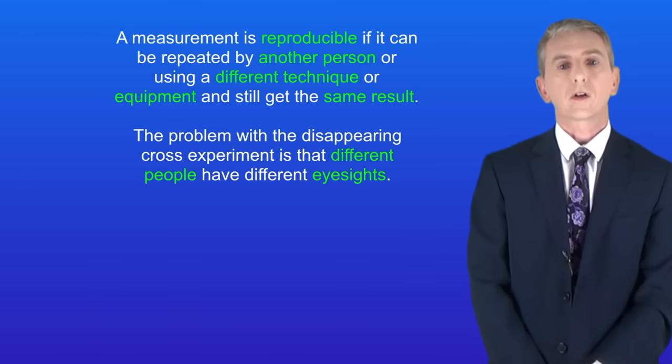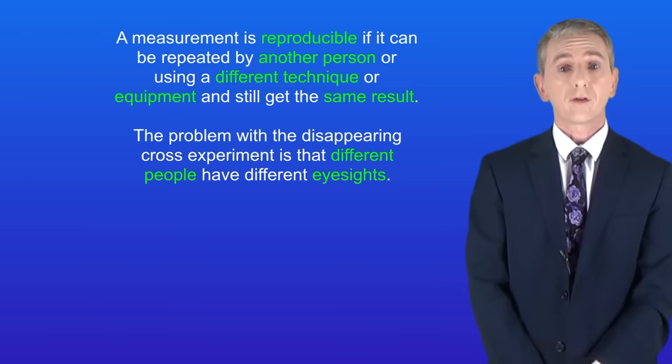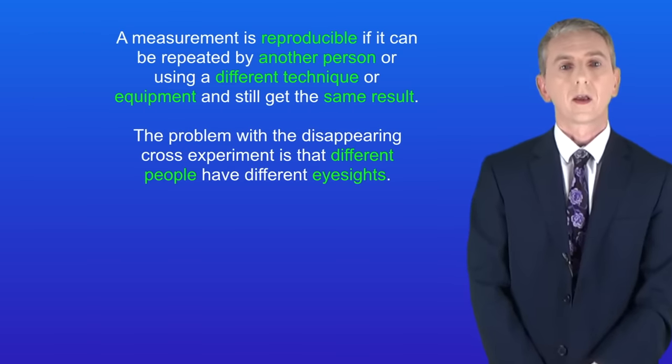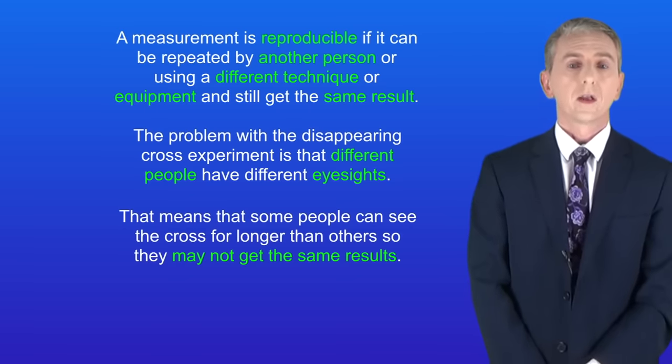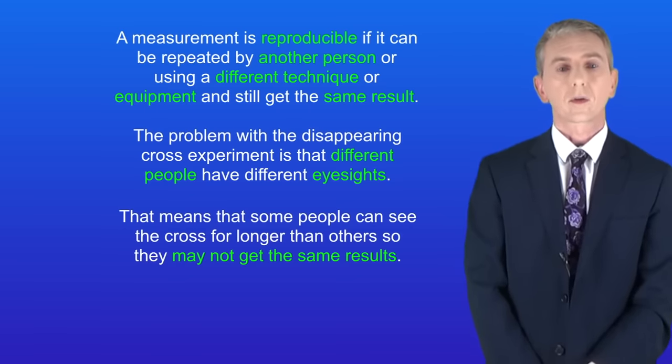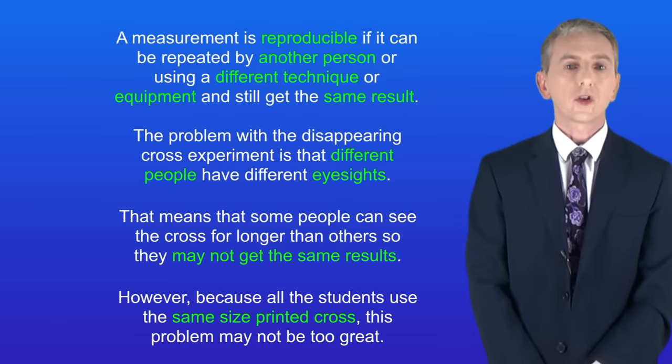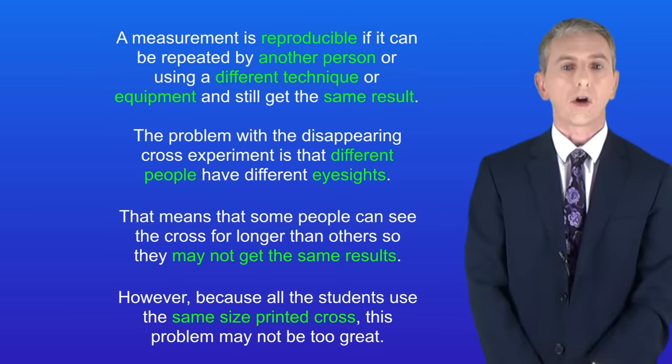Now the problem with the disappearing cross experiment is that different people have different eyesight. That means that some people can see the cross for longer than others so they may not get the same results. However because all the students use the same size printed cross hopefully this problem won't be too great.